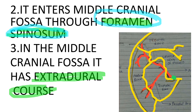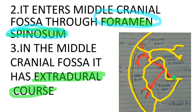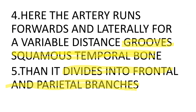The artery then enters the intracranial cavity — specifically the middle cranial fossa — through the foramen spinosum. In the middle cranial fossa it has an extradural course, meaning it runs outside the dura mater. So the key points so far: it arises in the infratemporal fossa, runs deep to lateral pterygoid, passes through the auriculotemporal nerve loop, then enters via foramen spinosum with an extradural course.